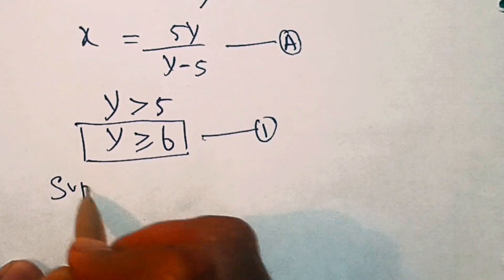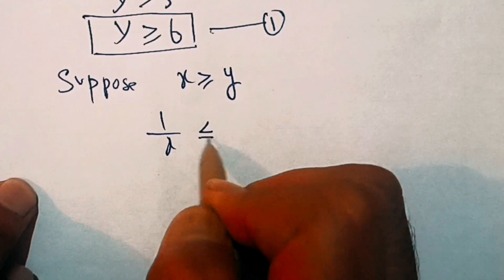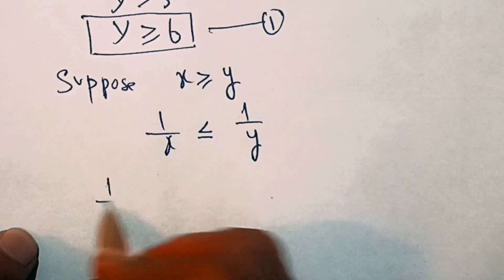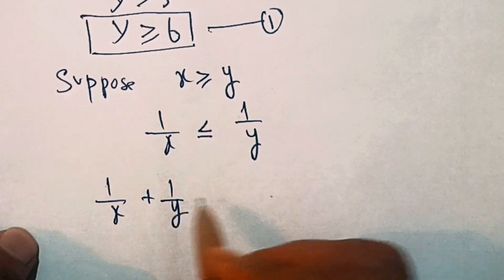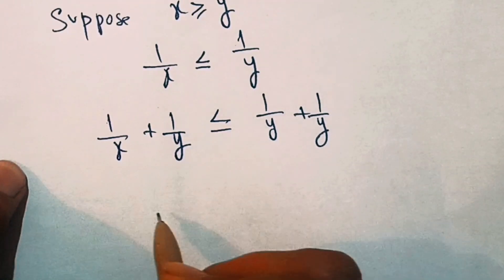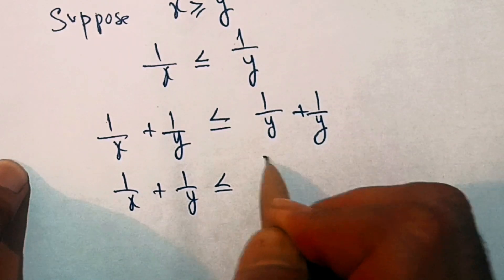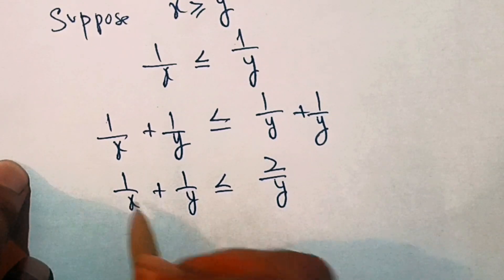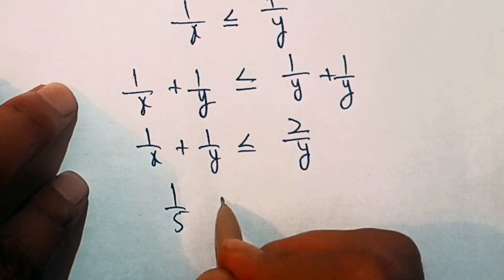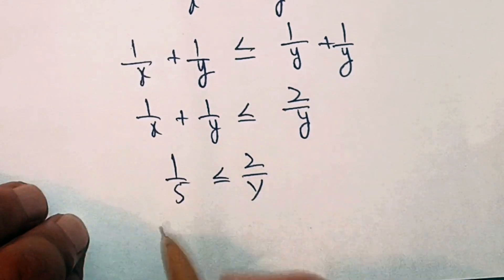Now let's suppose x is greater than or equal to y. That means 1/x ≤ 1/y. Adding 1/y on both sides: 1/x + 1/y ≤ 1/y + 1/y = 2/y. Since 1/x + 1/y = 1/5 from the question, that means 1/5 ≤ 2/y. Cross-multiplying gives us y ≤ 10.